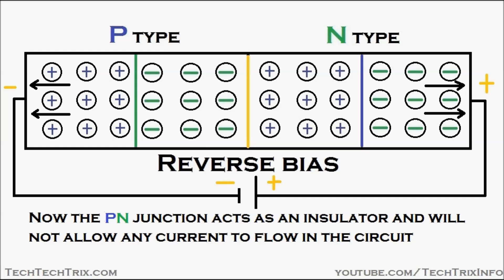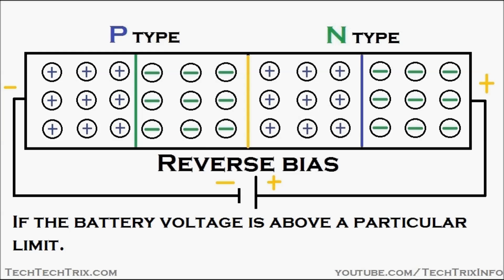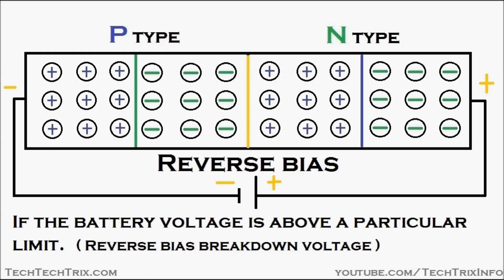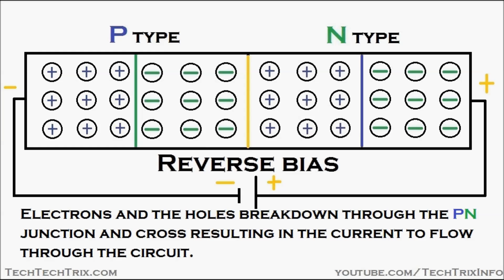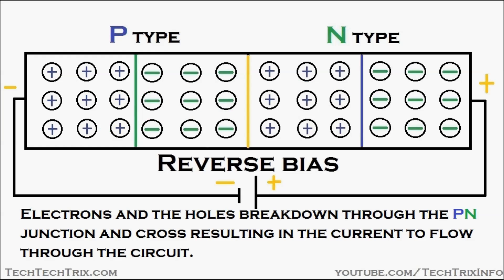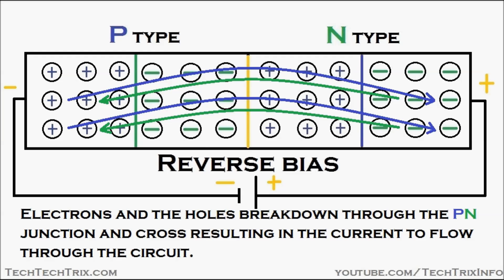The PN junction acts as an insulator and will not allow any current to flow in this circuit — the depletion layer will not allow the flow of electrons or holes in that region. However, if the battery voltage exceeds a particular limit called the reverse bias breakdown voltage, electrons and holes break through the PN junction and cross it, resulting in current flowing through the circuit. The negatively charged electrons cross the junction and move towards the P-region, and the positively charged holes break through and move towards the N-region.